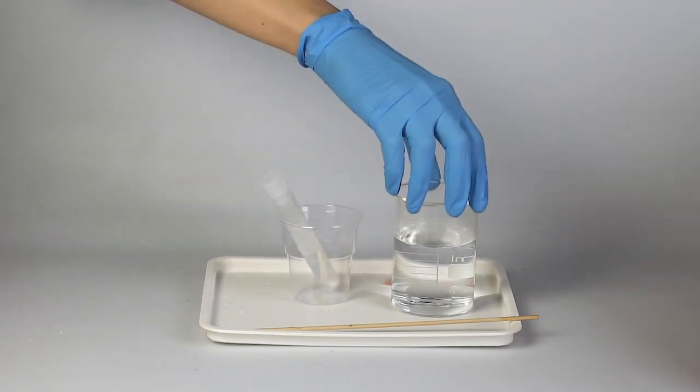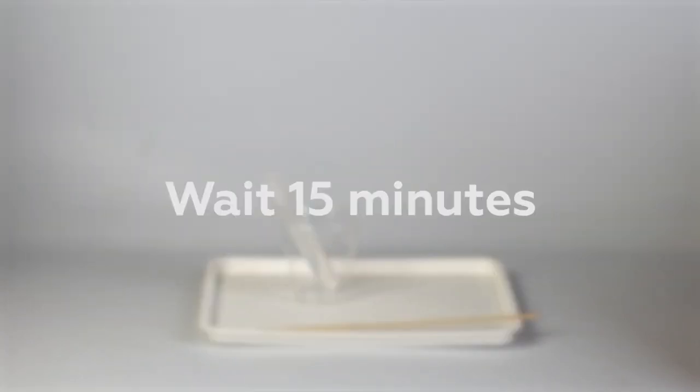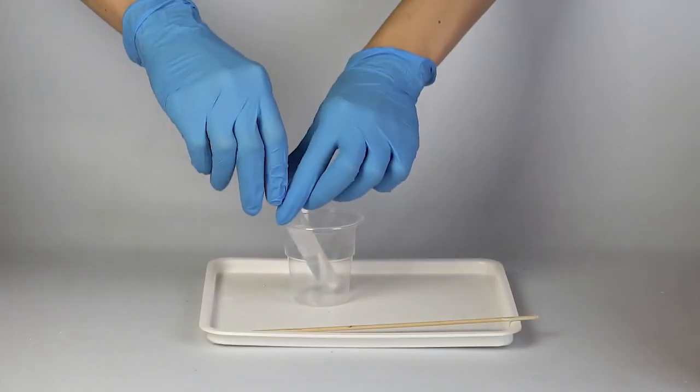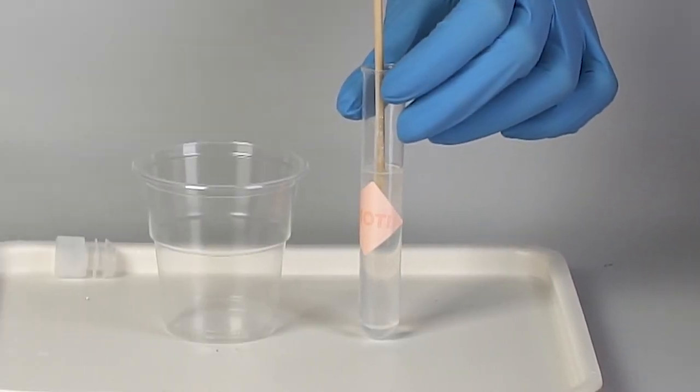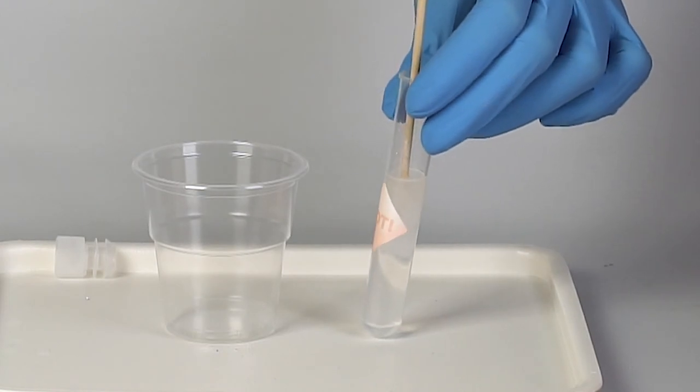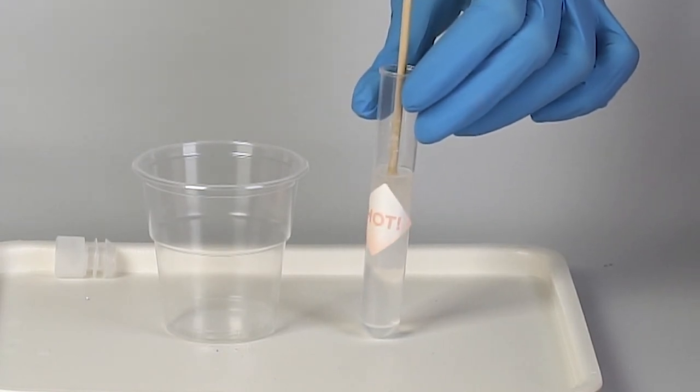Now, open the test tube and touch the solution with the tip of the splint. Since the test tube has cooled down, the sodium acetate will almost instantly crystallize, forming needles that look like snowflakes. You will notice this process produces enough heat to change the color of the thermosticker.